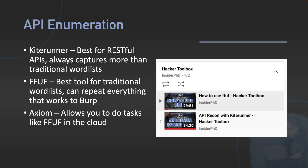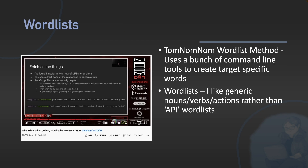Axiom allows you to do stuff in the cloud by splitting up processing across different servers for things like FFUF. I don't really recommend it for overloading a website, but there's certainly some debate around it — if you want to offload your processing, Axiom is a great way to do that. If you want to make word lists that are target-specific, I really recommend TomNomNom's word list method, which uses command line tools to create target-specific words. In terms of general word lists, I look for nouns, verbs, and actions rather than API word lists, as API word lists are really specific to a piece of software and don't generalise well.